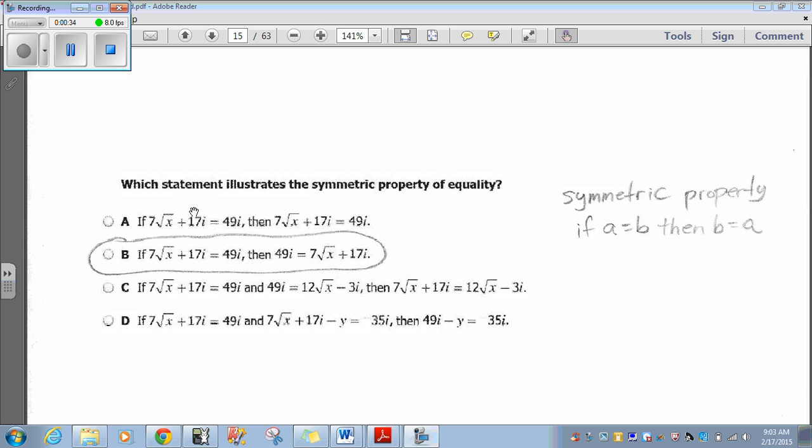If 7 square root of x plus 17i equals 49i, then 7 square root of x plus 17i equals 49i. Well, that's just restating the same thing, so that's not symmetric. Let's look at B. If 7 square root of x plus 17i equals 49i, then 49i equals 7 square root of x plus 17i. Here, if A equals B, and we can treat this first part as A, this part as B, then B equals A. That is the definition of the symmetric property, so B is our answer.